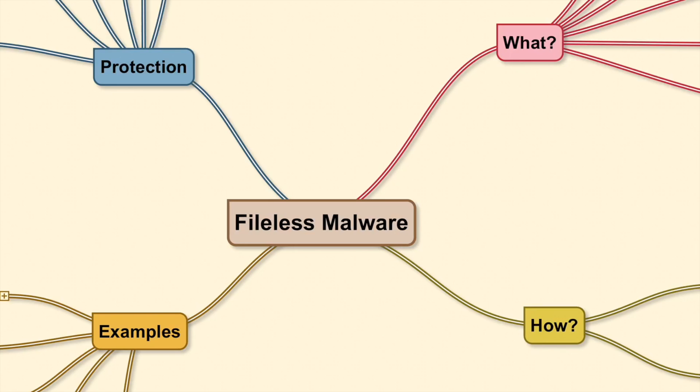Welcome to another video on my channel. Today I'm going to talk about fileless malware. As the name suggests, fileless malware infects computers leaving behind no trace on the local hard drive. This allows such infections to go unnoticed, as most antivirus and forensic tools identify attacks using signature-based or pattern-based validation. Using a mind map, I will cover the basics of fileless malware: what it is, how it propagates, what defense options we have, and some examples.